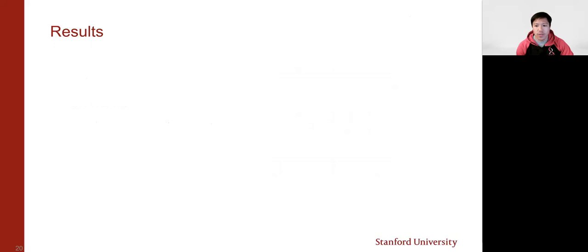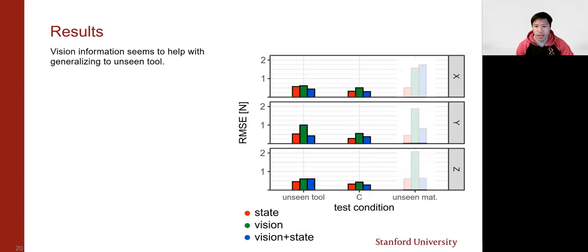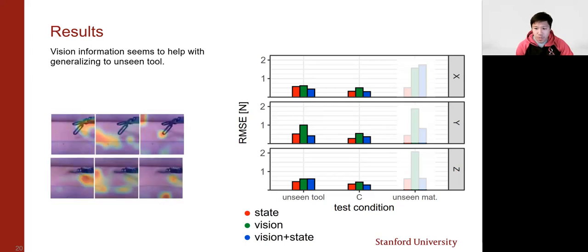Vision also helps when we estimate forces on an unseen tool. The RMSE plots here show that the vision state model gives better accuracy than the state-only network for unseen tools, and this suggests that vision inputs are generalizing well to the different tool, and this can be also seen in the convolutional neural net activation heat maps, which show which pixels contribute most to the force prediction. We see that the activation regions are similar for both tools, and this suggests that the network is looking or activating in similar ways regardless of tool.